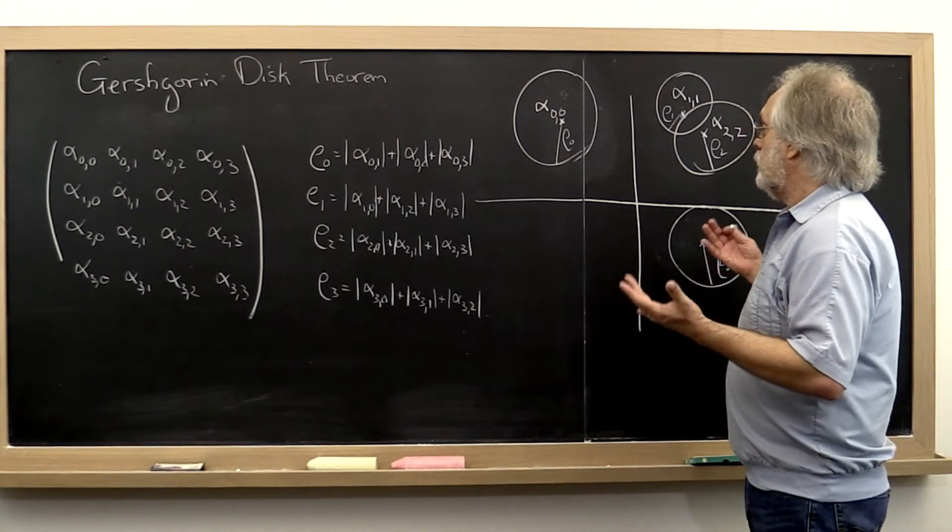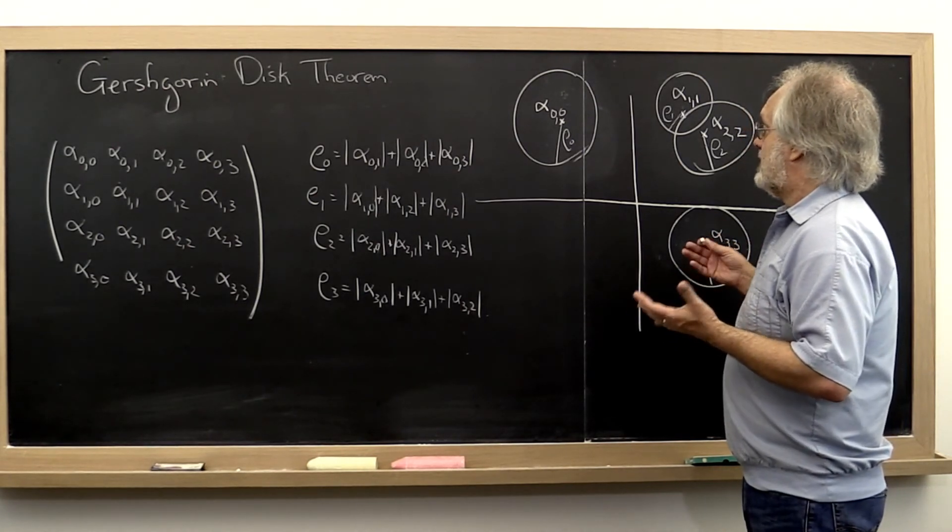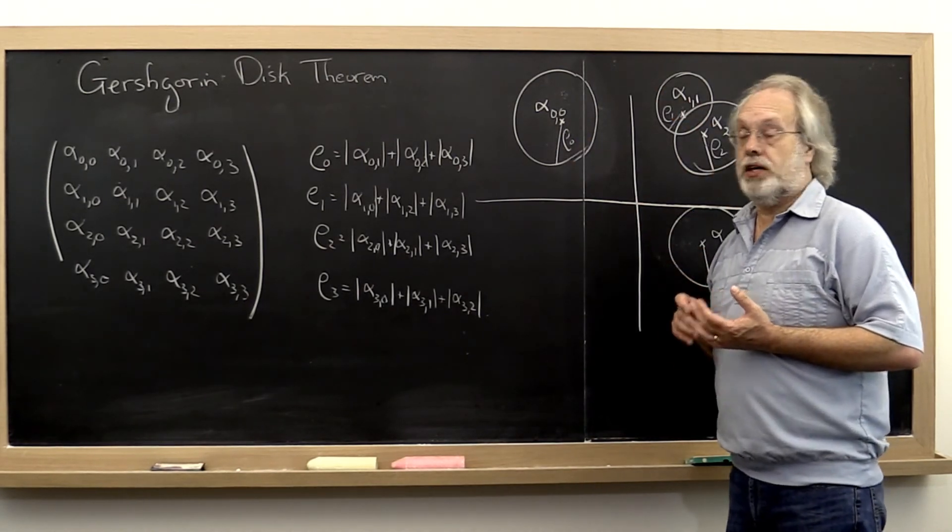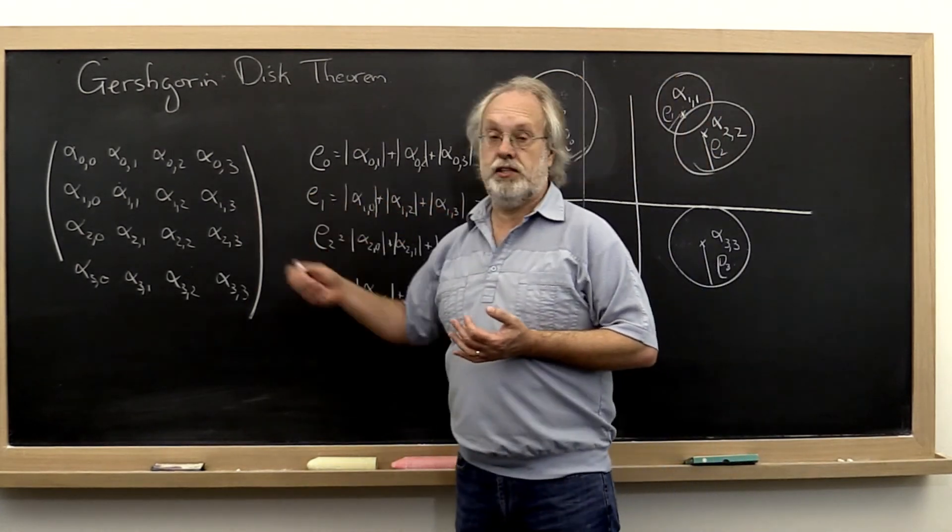And that's particularly useful when, for example, you know that these disks do not include the origin because then you know that the matrix is non-singular.